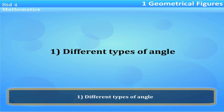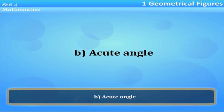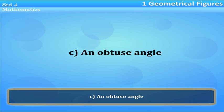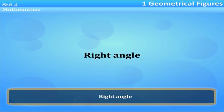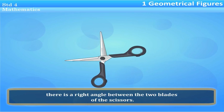There are different types of angles: a right angle, b acute angle, and c obtuse angle. A right angle — in the picture alongside, there is a right angle between the two blades of the scissors.